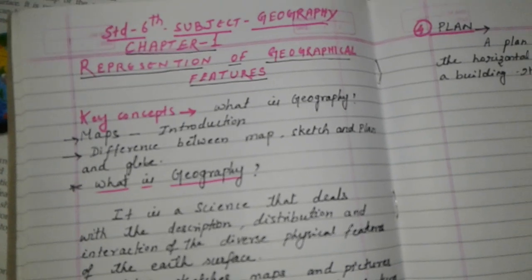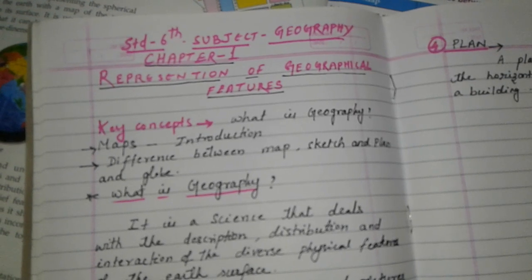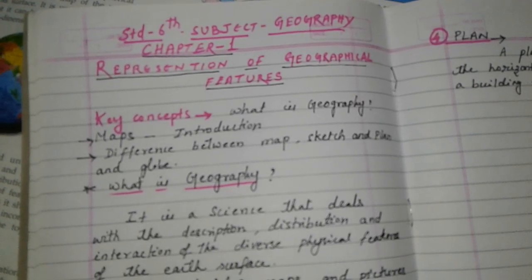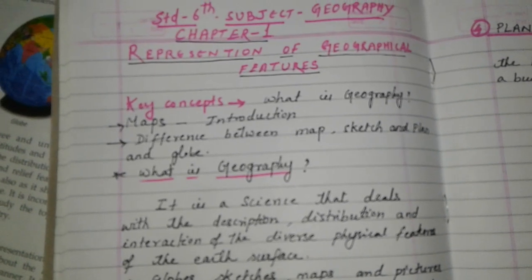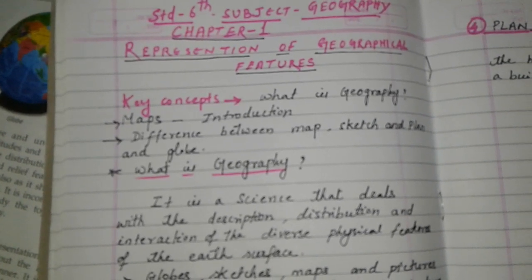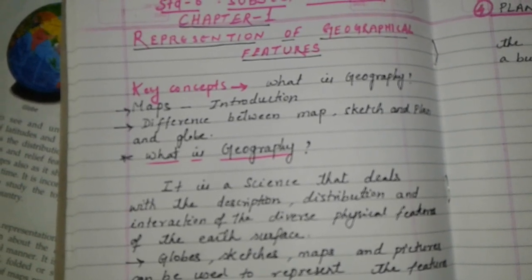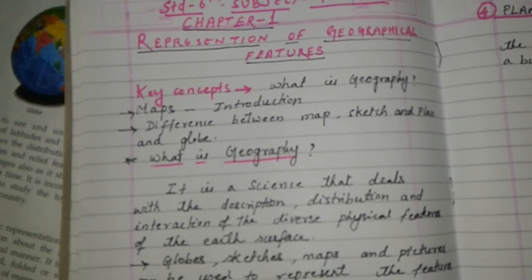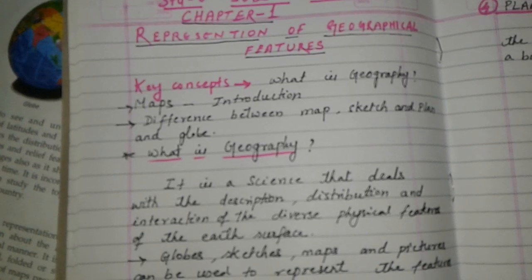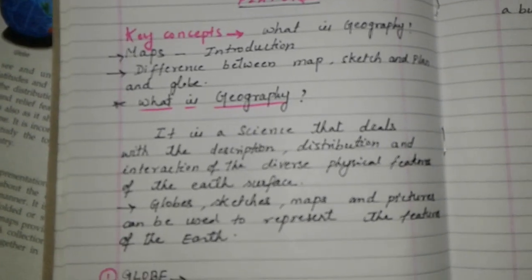Hello children, let us start Standard 6 Geography, Chapter 1: Representation of Geographical Features. Before reading this chapter, let us know the key concepts: what is geography, what are maps, the introduction, difference between map, sketch, plan, and globe.